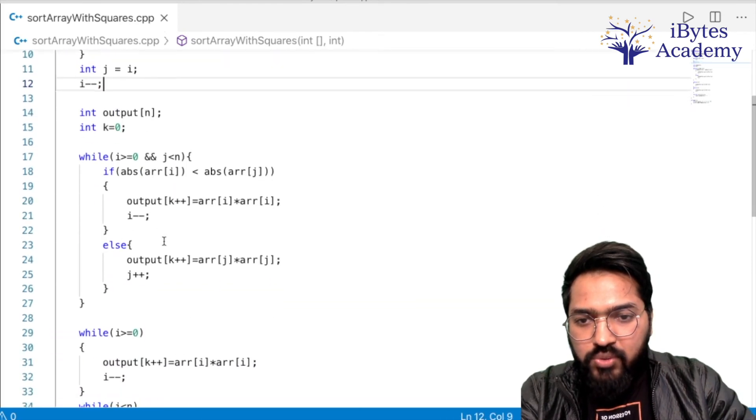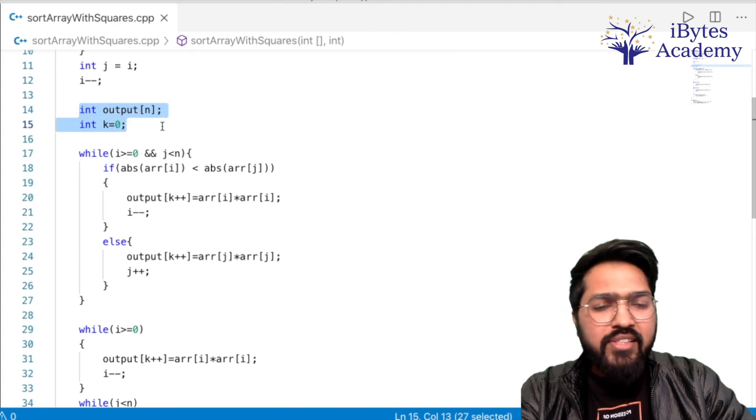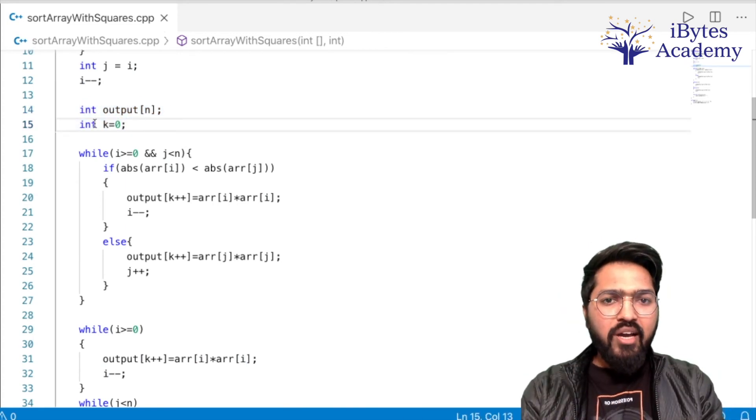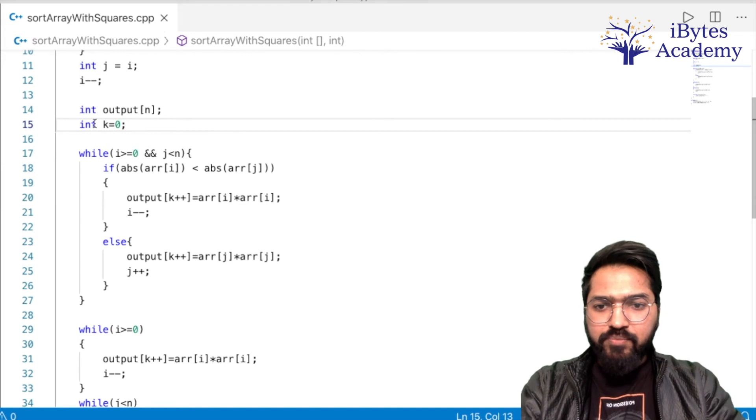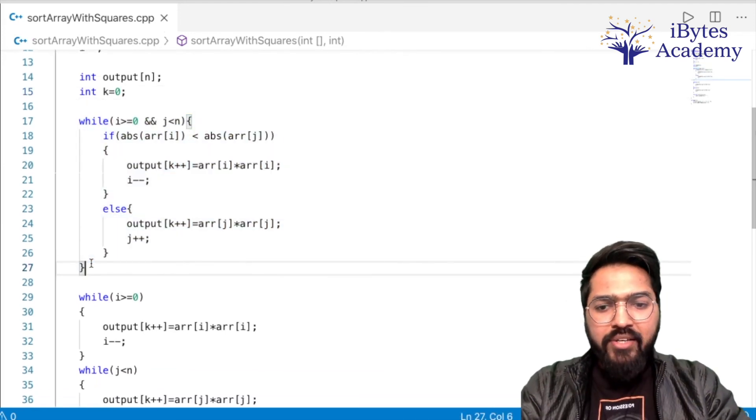Uske baad humne ek naya array le liya same size ka aur int k is equal to 0. Ek k variable rakh lenge output ke current index ke liye. Chalo phir yahan pe humm log hummare array ko merge karke output mein daal rahe hain.